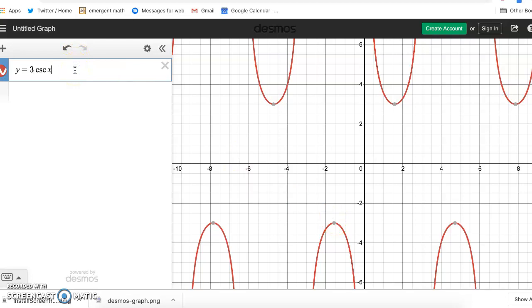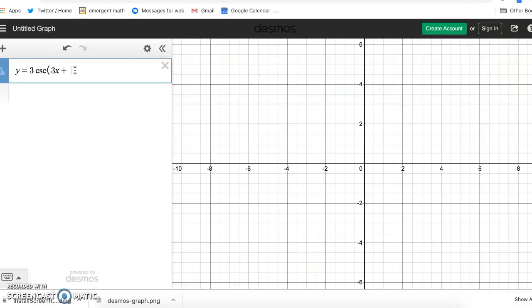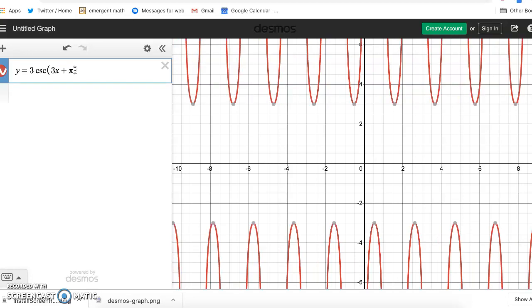Also we have this stuff, the three x plus pi. Notice though that that actually does not affect the range. We still have our gap from three to negative three. So the three up front amplifies that gap, this stuff inside does not.